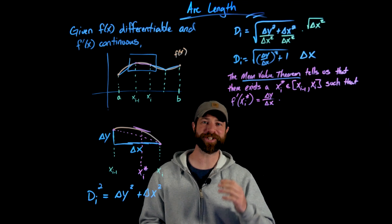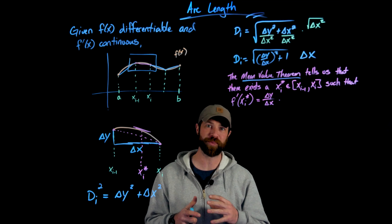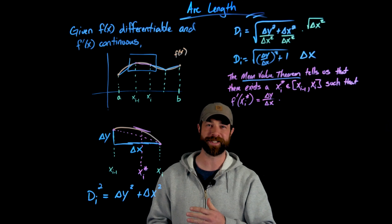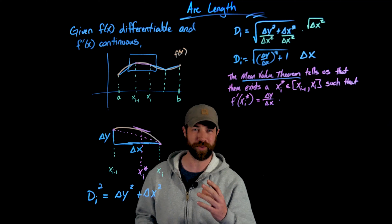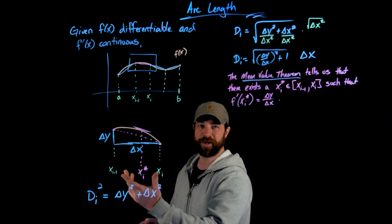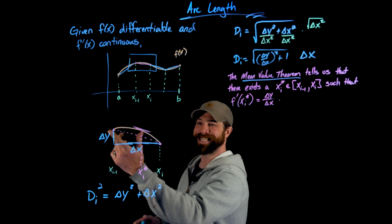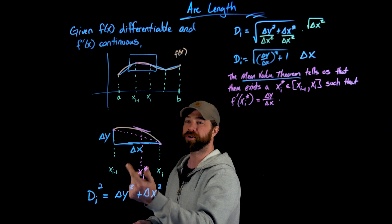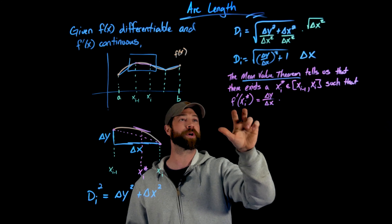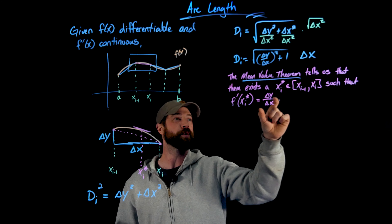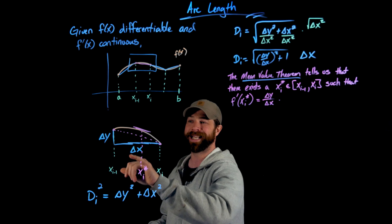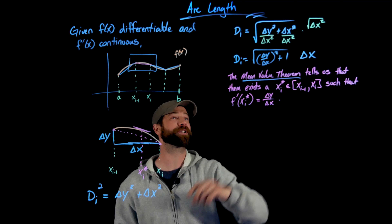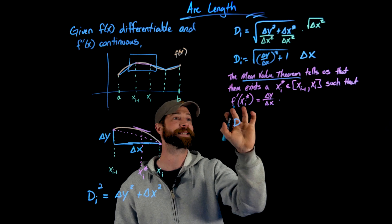The mean value theorem is an extremely powerful theorem — we've used it at really important points. We have a continuous function on an interval; we know the slope of the secant line connecting the endpoints. When we find that value, there must be at least one point on that interval with that same slope. In other words, if we take the derivative at that point, we get this value we defined as delta y over delta x, the slope. That lets us replace delta y over delta x with f'(x_i*) for this interval.